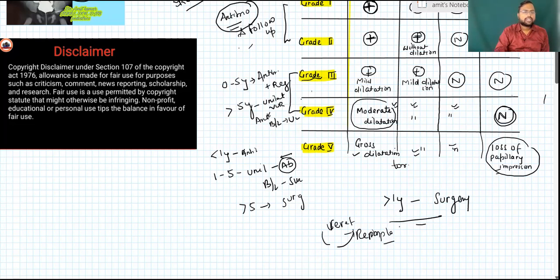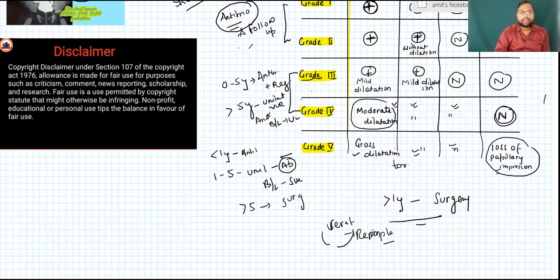To summarize: Grade 1 — ureter only; Grade 2 — up to pelvis without dilatation; Grade 3 — mild dilatation of ureter and renal pelvis; Grade 4 — moderate dilatation without loss of papillary impression; Grade 5 — gross dilatation with tortuosity and loss of papillary impression. Hope you enjoyed this video. Kindly like, subscribe, and follow my channel.